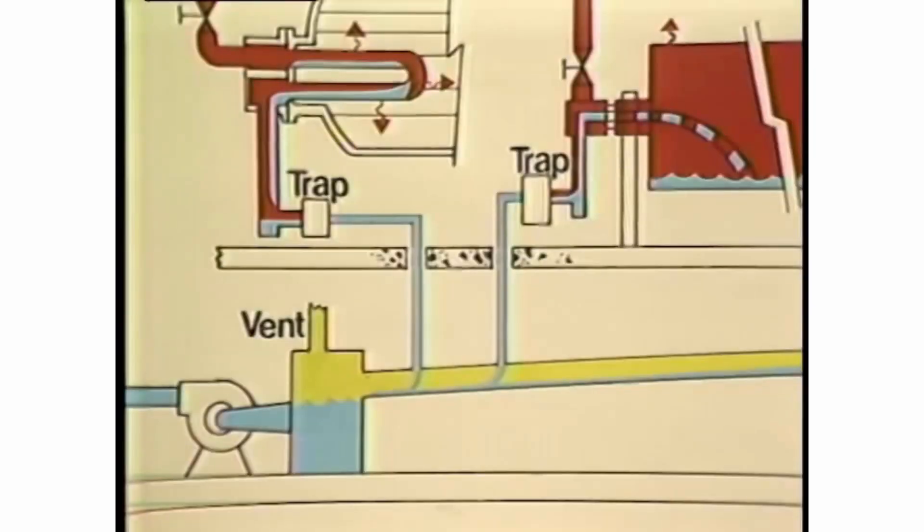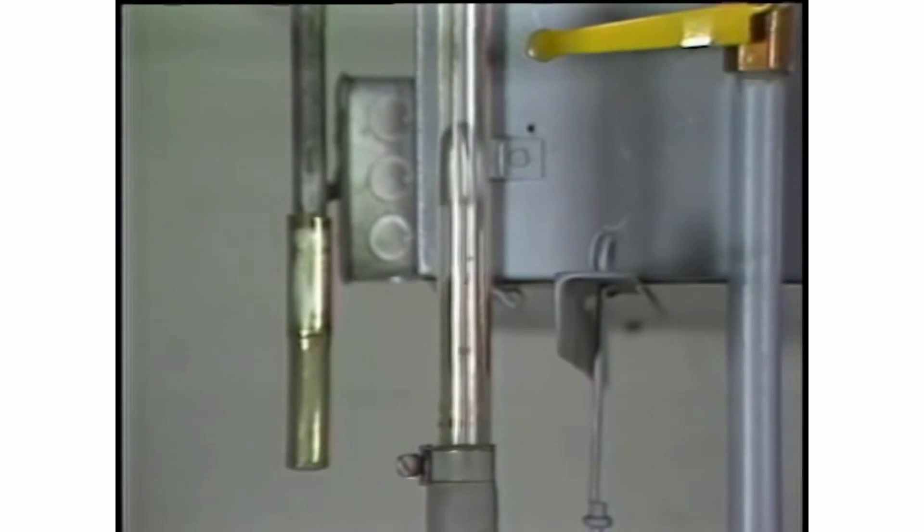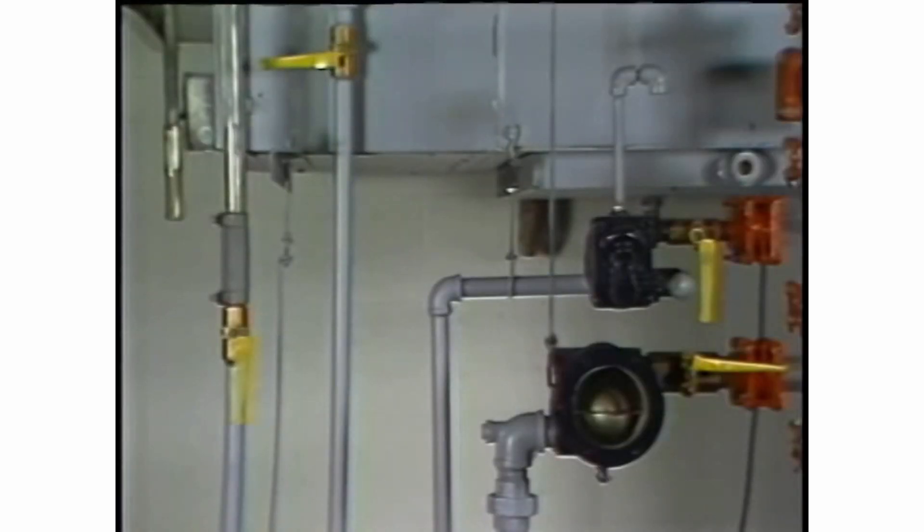Ideally, condensate should flow from the steam trap by gravity to a receiver. Such an arrangement is not always practical, however. In some applications, the only space available for return lines is overhead, so condensate must be elevated from the trap. The force to elevate condensate is provided by the differential pressure across the trap. Since each two feet of lift reduces this differential pressure by one pound, be sure there is adequate pressure both to elevate the condensate and to maintain adequate trap capacity.